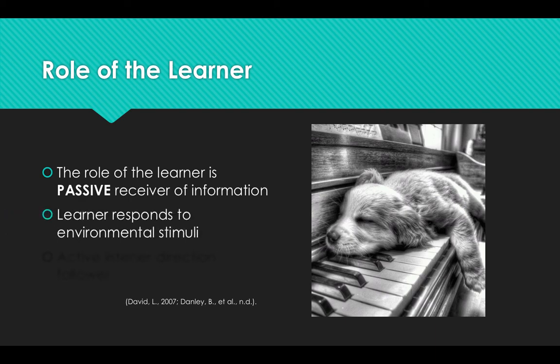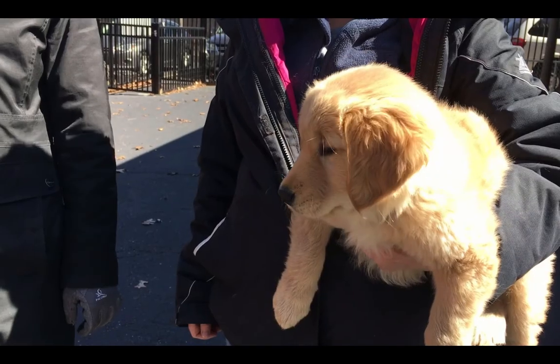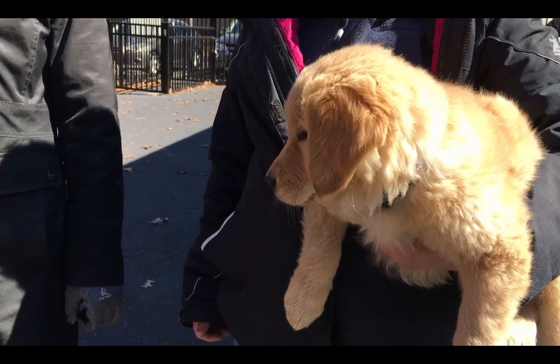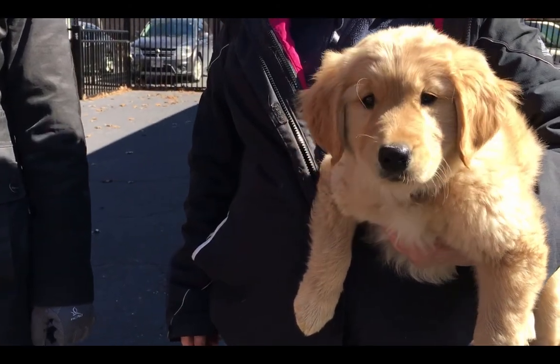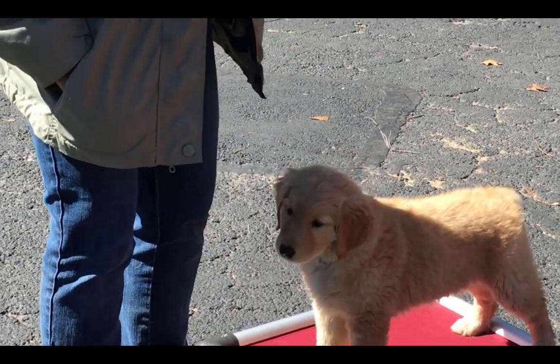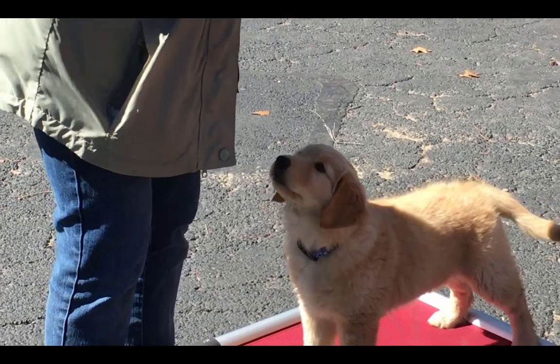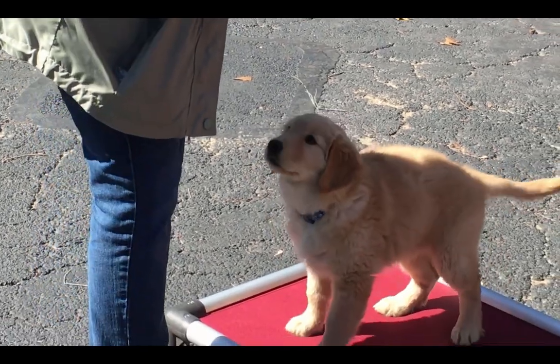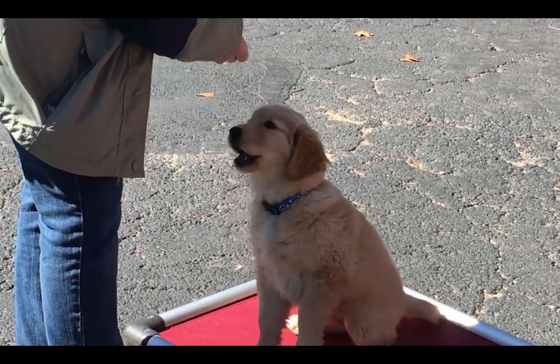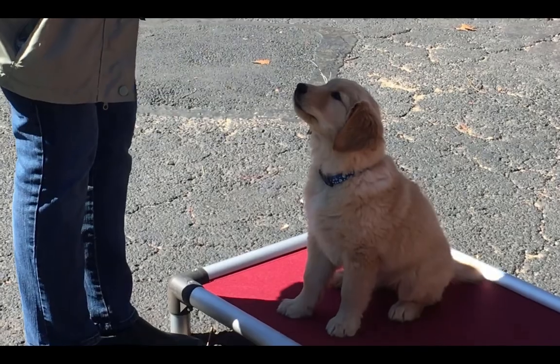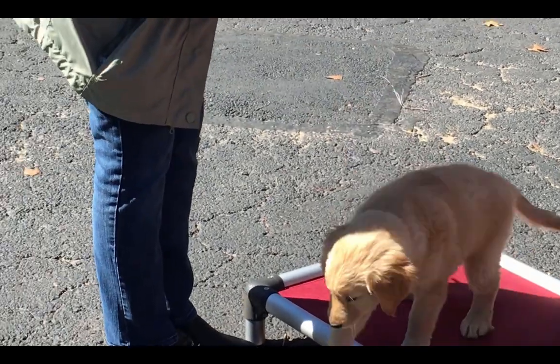Under the framework of behaviorism, the role of the learner is a passive receiver of information. The learner merely listens, follows directions, and responds to environmental stimuli. Here we see a puppy training to one day become a service dog. To explain more about how Assistance Dogs for Achieving Independence uses behavioral principles to train their dogs is canine services manager Anna Jones.